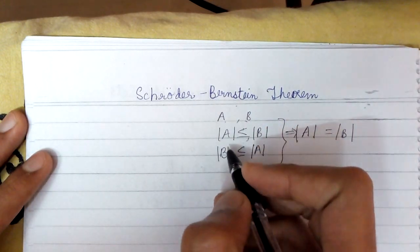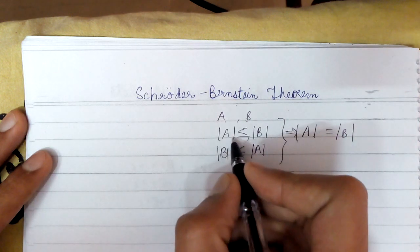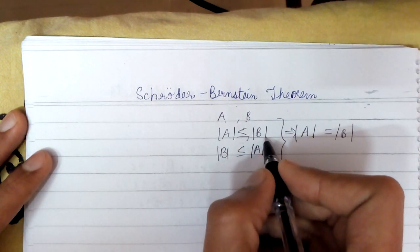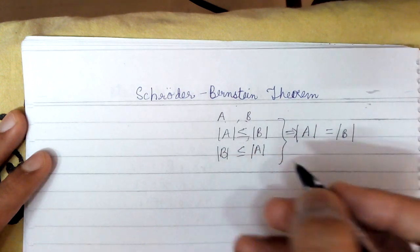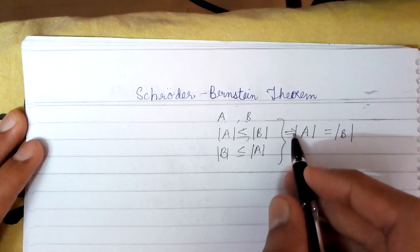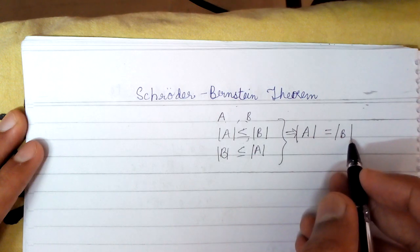So we are given two sets A and B which satisfy cardinality of A is less than or equal to cardinality of B, and cardinality of B is less than or equal to cardinality of A. Then we can say that cardinality of A is equal to cardinality of B.